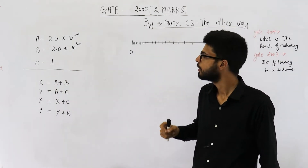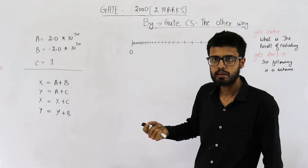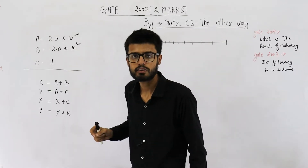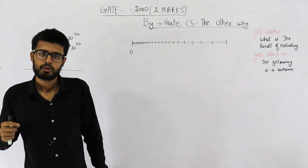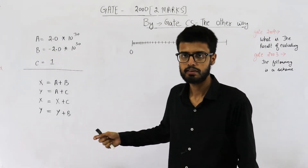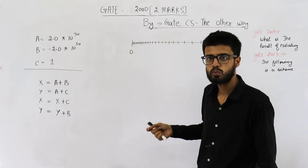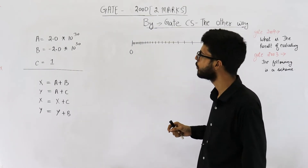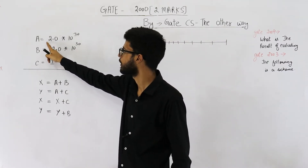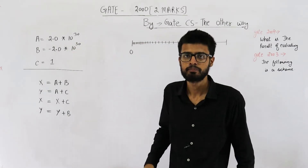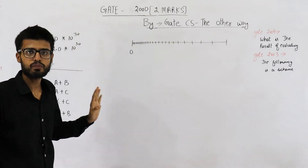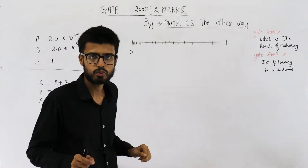They haven't clearly mentioned whether we are using IEEE single precision or not. They have just said 32 bits are used to represent a floating point number. So we'll analyze both cases: what happens if we use IEEE single precision, that's the 754 standard, and what happens if we don't. If we don't use it, you can safely consider that all 32 bits save the mantissa part.